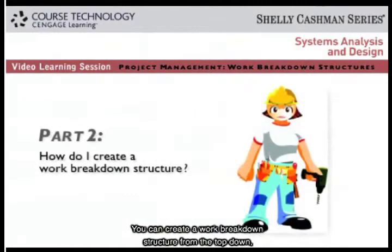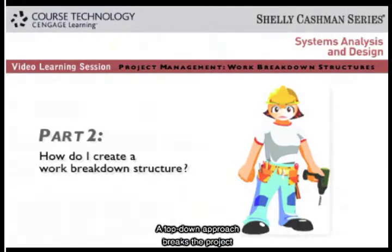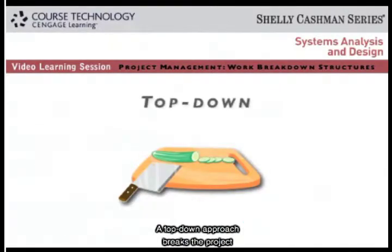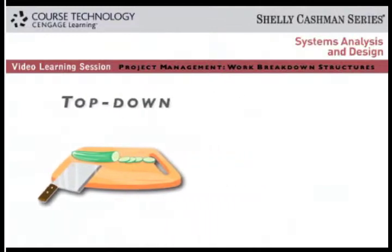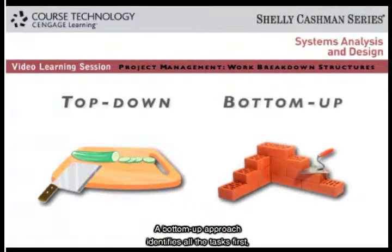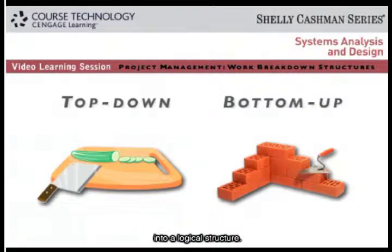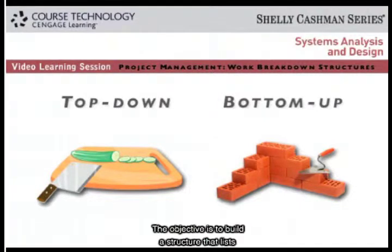You can create a work breakdown structure from the top-down or from the bottom-up. A top-down approach breaks the project into smaller task groups, and then into individual tasks. A bottom-up approach identifies all the tasks first, no matter how small, and then builds them back into a logical structure. Depending on the project, you might use either method, or both. The objective is to build a structure that lists and describes all tasks accurately.